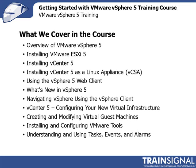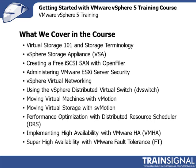So what are we going to learn in this course? We've got a ton of exciting topics. We'll start with an overview of vSphere 5, then walk through installing ESXi, vCenter 5, and vCenter 5 as a Linux appliance — the VCSA, which is a brand new feature of vSphere 5. From there, we'll move on to using vSphere 5's web client, a lesson on what's new in vSphere 5, navigating vSphere using the vSphere client, configuring virtual infrastructure with vCenter 5, creating and modifying virtual machines, installing VMware tools, and examining tasks, events, and alarms. Then we'll cover virtual storage 101 and storage terminology.